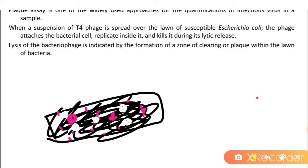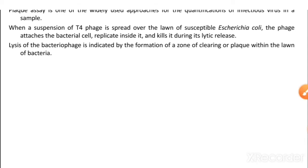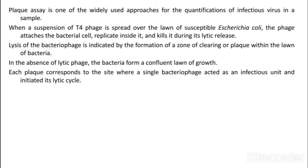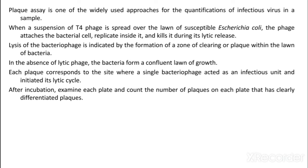The cleared zones indicate a lytic cycle of bacteriophages. In the absence of lytic phage, the bacteria form a confluent lawn of growth with no plaque formation. Each plaque corresponds to the site where a single bacterium was attacked as an infectious unit and initiated its lytic cycle. Therefore, one plaque equals one virus or one lytic cycle.